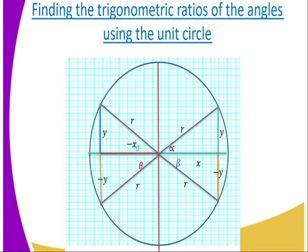When you go to where theta is, that is the third quadrant. In the third quadrant, only tan is positive — not cos, but tan. Only tan is positive.